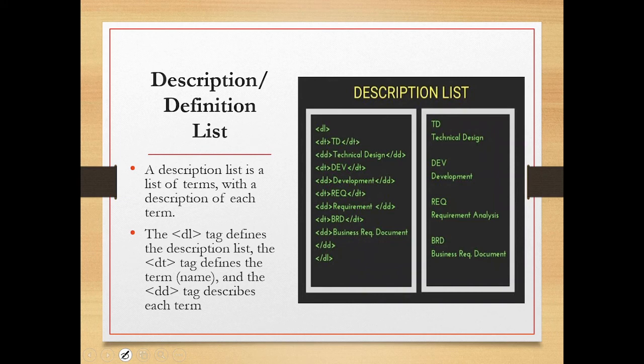In the example, you can see the dl tag is written first, followed by the dt tag with the term — for example, 'TD' standing for 'Technical Design.' Even without explicit line breaks, the browser understands it should display on different lines: the term is highlighted and the data follows below it. The dt and dd do not appear on the same line — the term is separate from the data. You can also write multiple lines of definition data.